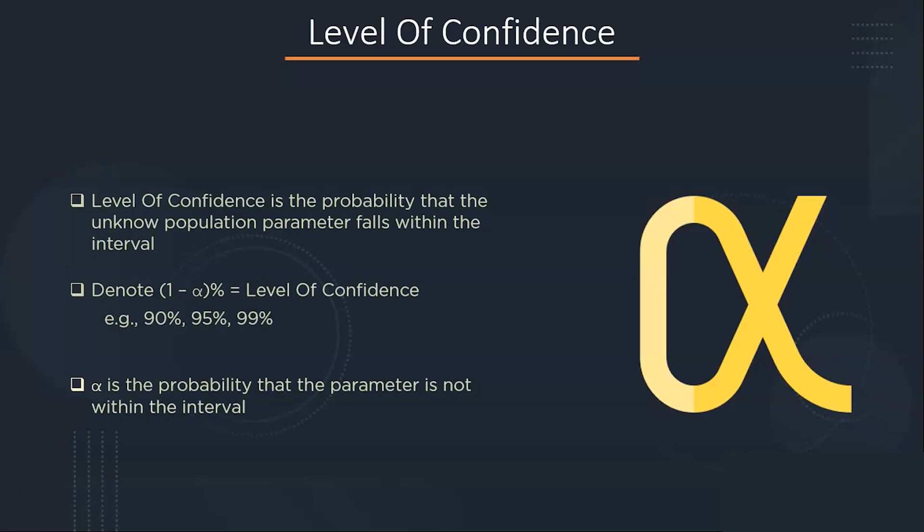Alpha is usually expressed as a proportion. So if the confidence level is 95 percent, then alpha will be equal to 1 minus 0.95, that is 0.05. Now let's move on to discuss what this confidence level means.